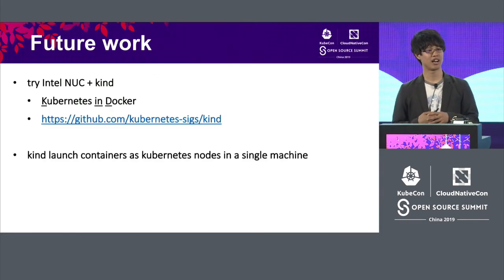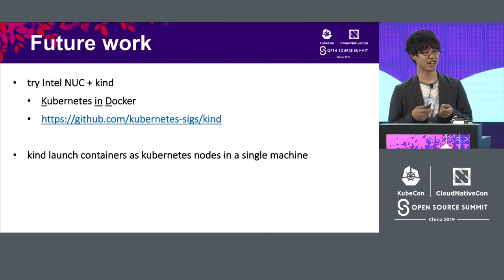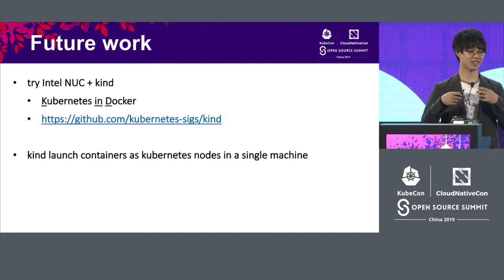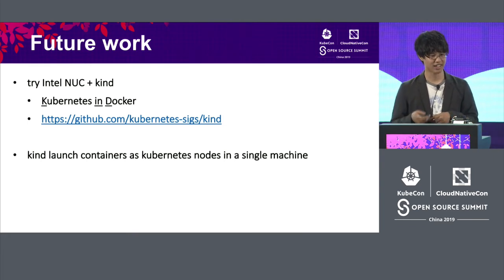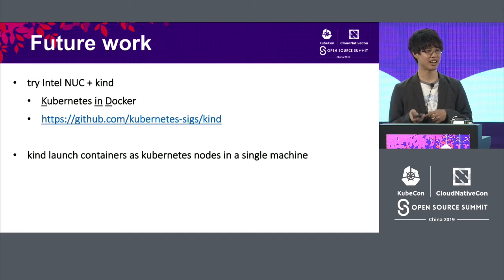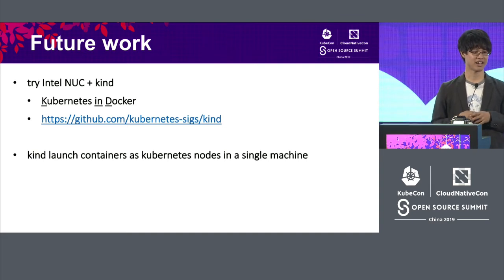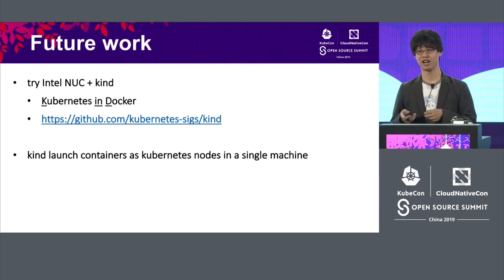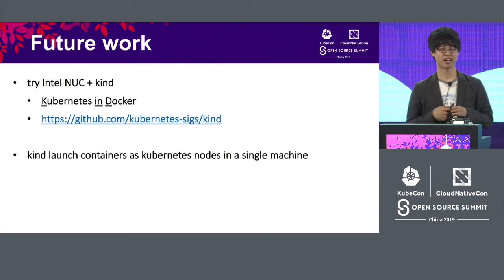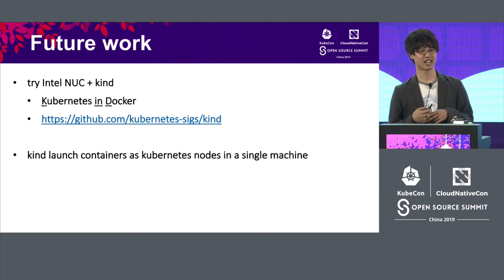Future work: I'd like to get an x86 personal cluster. So I plan to try Intel NUC and KIND. KIND stands for Kubernetes in Docker — it runs Docker containers as Kubernetes nodes on a single machine, so we can build a large multi-node Kubernetes cluster on a single machine. And of course, today Raspberry Pi 4 was announced, so I'd like to build with that too.